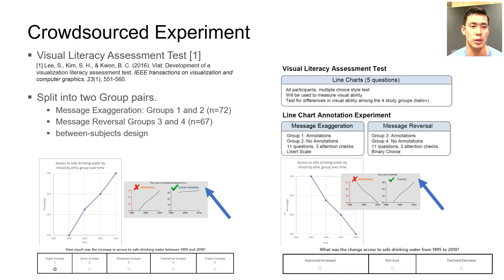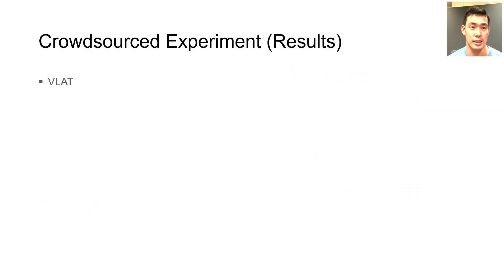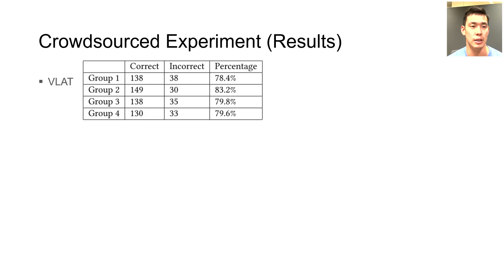We analyzed the results of the visual literacy assessment test. The scores across all four groups had similar means, and a statistical test yielded the result that there was no significant difference between the groups. Therefore, uniformity of visual ability is implied.